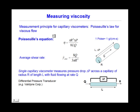To measure viscosity, we use a very simple principle and apply Poiseuille's Law for viscous flow. A single capillary viscometer is used, which measures pressure drop across a capillary of radius r and length l with fluid flowing at a specific rate.